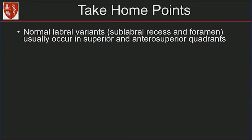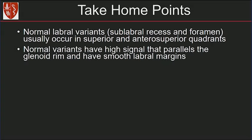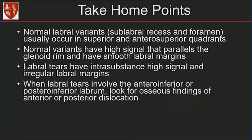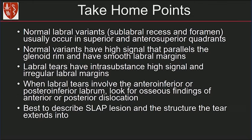In summary: normal labral variants such as the sublabral recess and foramen usually occur in the superior and anterior superior quadrants. Normal variants have high signal that parallels the glenoid rim with smooth labral margins. In comparison, labral tears have intrasubstance high signal and irregular labral margins. When labral tears involve the anterior inferior or posterior labrum, look for signs of anterior or posterior dislocation. And in our practice, it's best to describe the SLAP lesion and the structure the tear extends into.